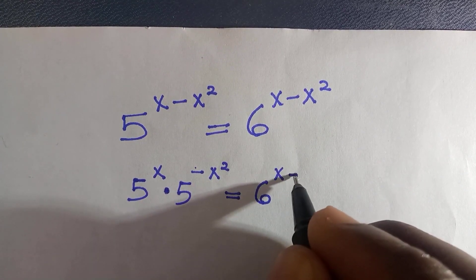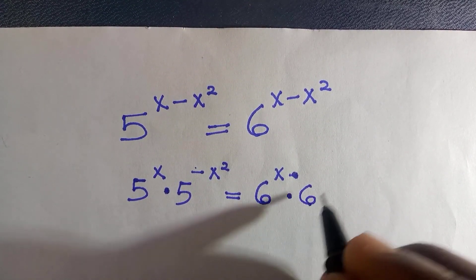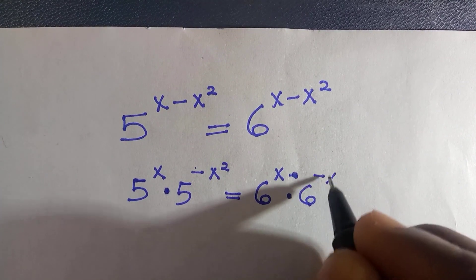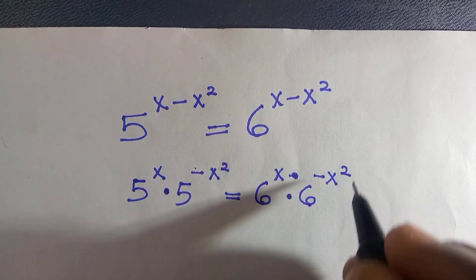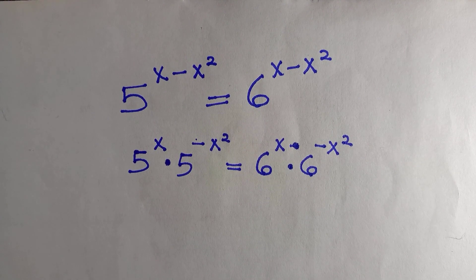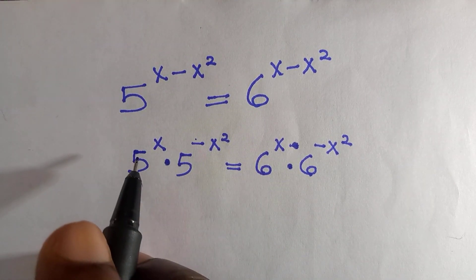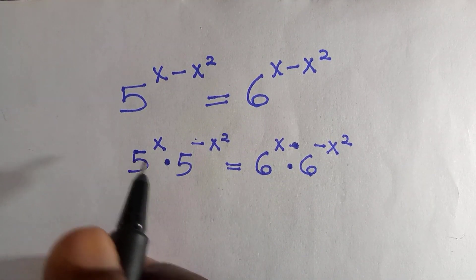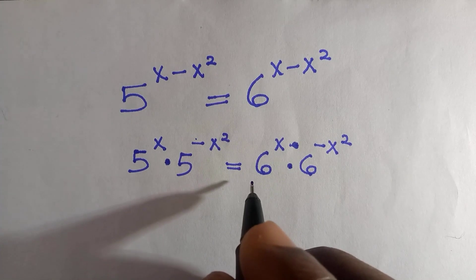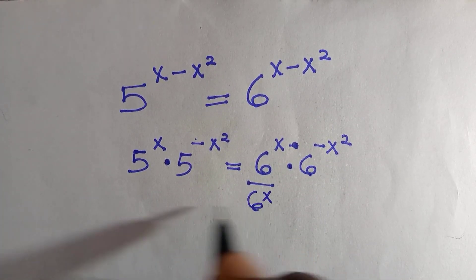We do the splitting for this as well: six raised to the power of x, dot six raised to the power of negative x. This is a particular law of indices, so we do the separation. The next thing to do is the grouping.